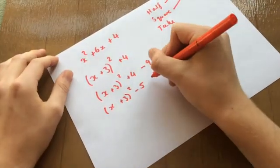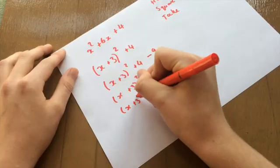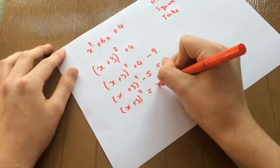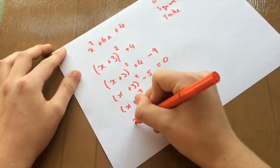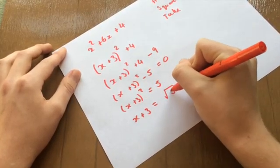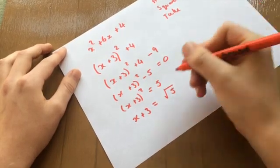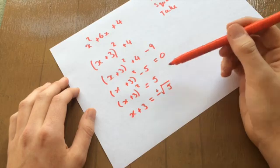And then again, to solve it, we set that equal to 0. We move the 5 across. So equals 5, because we plus 5 to both sides. Then we square root it. So x plus 3 equals square root 5. And this can be plus or minus square root 5.